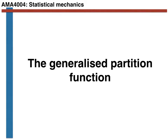In this video we are going to use the method of Lagrange multipliers to find an expression for the so-called generalized partition function. The generalized partition function is one of the central ideas in statistical mechanics, so this video is important. Please ensure that you have understood the method of Lagrange multipliers before watching this video, and also that you are comfortable with the expression for the value of the information function for a non-uniform probability distribution. Given that you have not stopped the video, I am going to assume that you understand information and Lagrange multipliers.